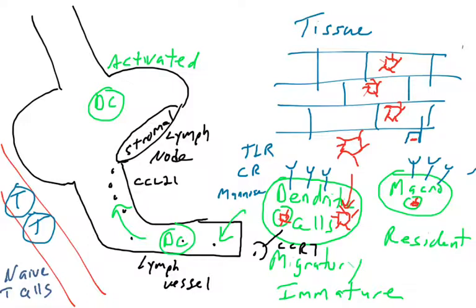And so now the dendritic cells are becoming activated. So they are traveling into the lymphatic tissue, the lymph node, and that's where they're going to present antigen to naive T cells.